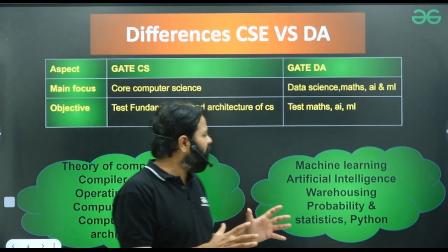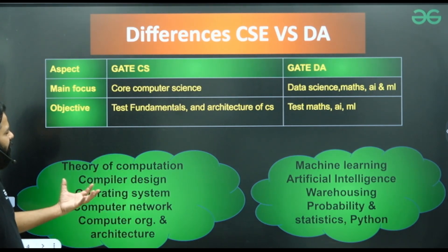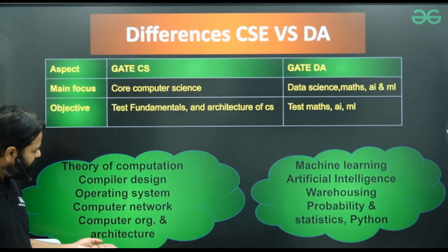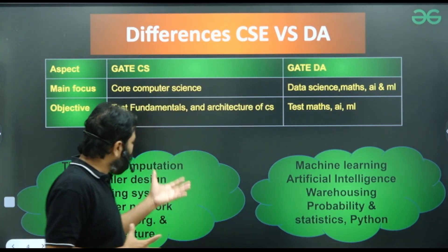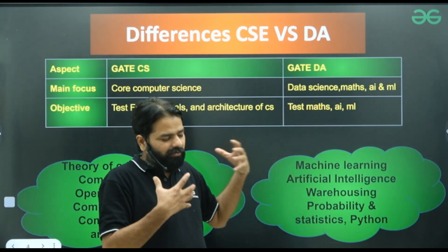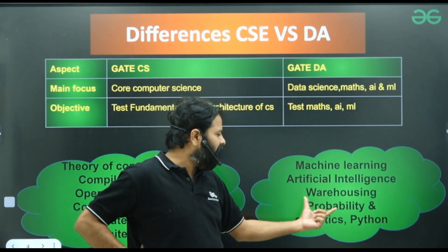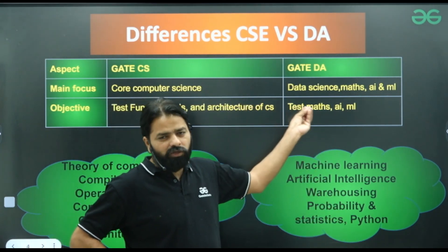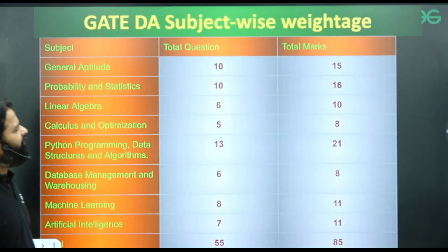When looking at CS, you focus on core computer science fundamentals — architecture, system-related topics like TOC, compiler, operating system, computer organization, and networks. These help you understand core computer science concepts. For GATE DA, it's all about mathematics, testing your knowledge in machine learning and AI skills, which requires knowledge of machine learning, AI, data warehousing, probability, statistics, and Python.